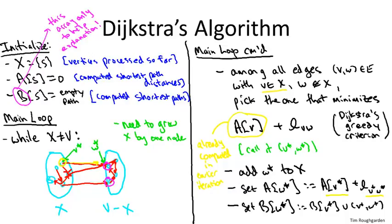We focus only on edges that cross the frontier — edges with their tail in X and their head outside X. For each such crossing edge, we compute the Dijkstra greedy score: the previously computed shortest path distance to the tail of the arc, plus the length of the arc. The minimum-scoring edge is called V* W*. We add the head W* to X, and set its shortest path distance to the distance of V* plus the length of the hop V* W*.